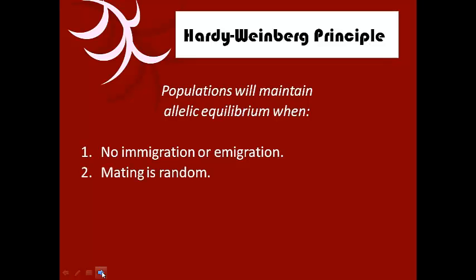Number two: mating has to be random. There should be no particular characteristic causing some organisms to mate more with others — no bird call or physical feature making females or males choose one over the other. We need that random mix of genes to happen in order to maintain equilibrium.